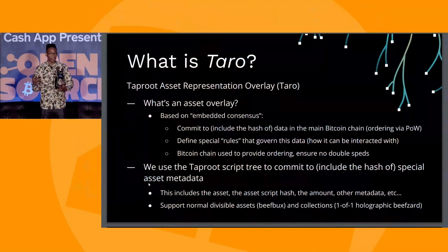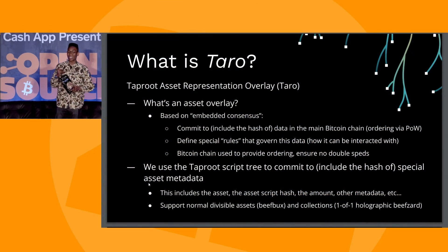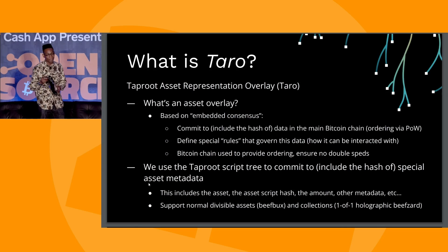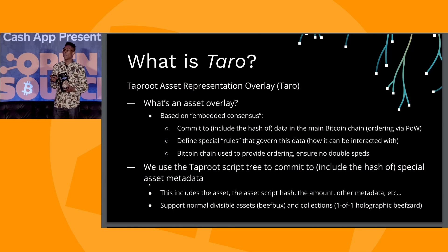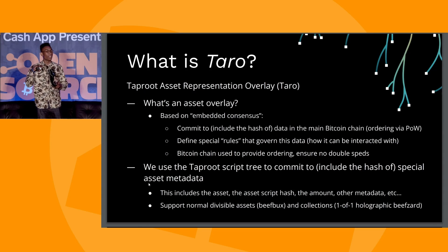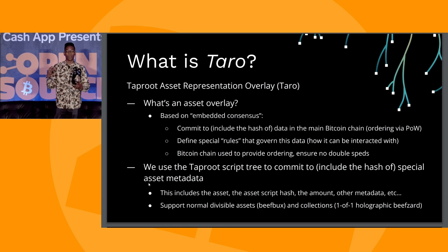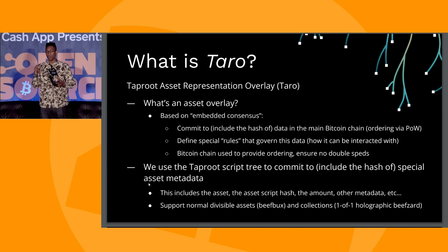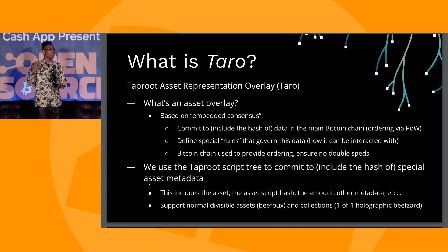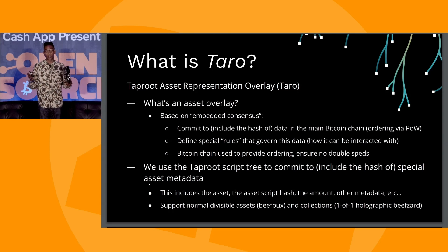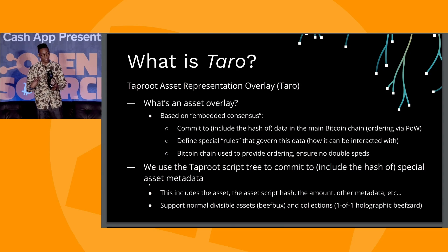So what is Taro? It stands for Taproot Asset Representation Overlay. By 'overlay' we mean something called embedded consensus. Rather than including all data executed into the chain — like things like Omni and Counterparty — we basically commit to a hash of data into the chain itself. We say 'embedded consensus' because we make up rules for how things work and interpret them with additional validation logic alongside. Effectively it's using Bitcoin, the most secure blockchain in the world, as a publication system.